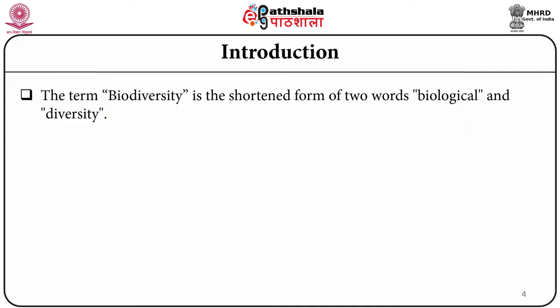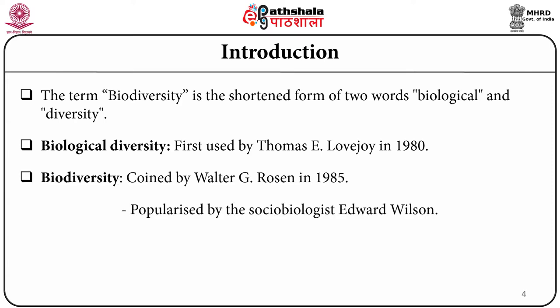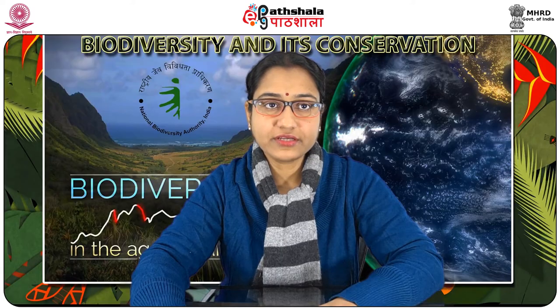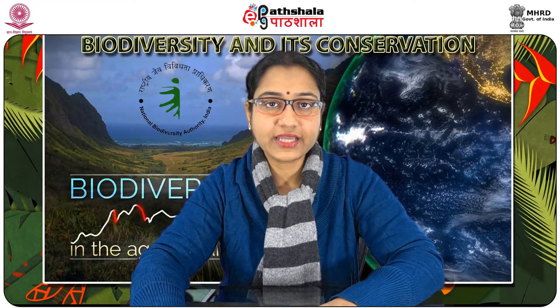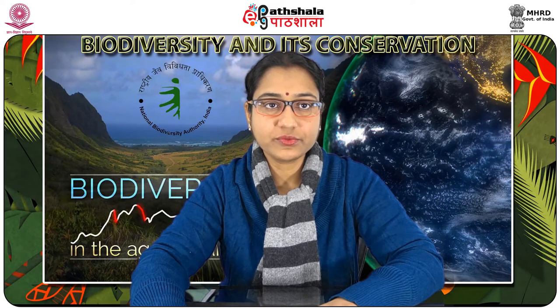The term biodiversity is the shortened form of two words: biological and diversity. Biological diversity was first used by Thomas Lofscher in 1980. The term biodiversity was coined by Walter G. Rosen in 1985, but was popularized by the socio-biologist Edward Wilson.